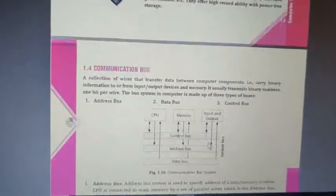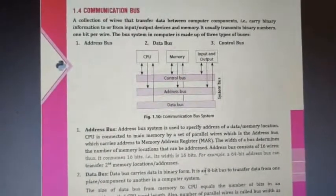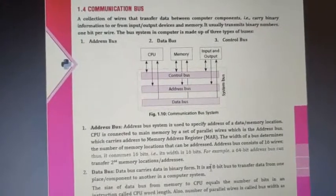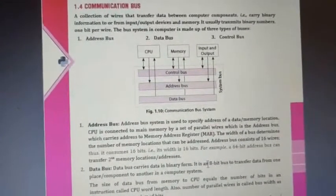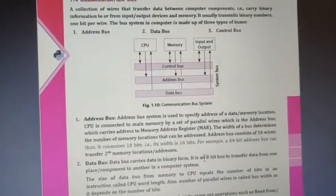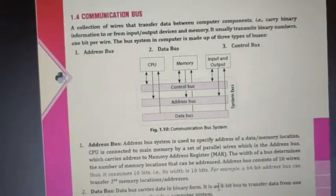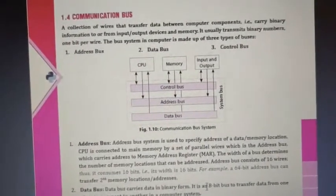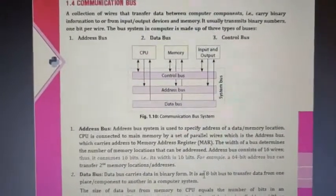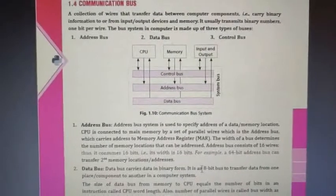Next topic is communication bus. A communication bus is a collection of wires that transfer data between computer components, carrying binary information to or from input/output devices and memory. It usually transmits binary numbers one byte per wire. The bus system in a computer is made up of three types of buses. The first is the address bus, which specifies the address of the memory location where data has to be collected or sent.